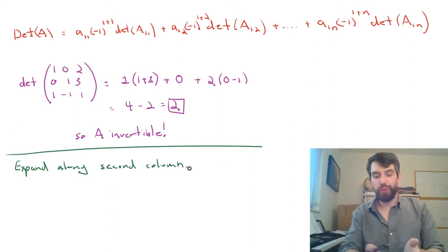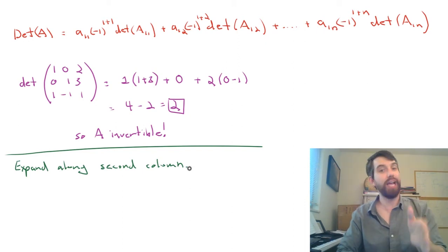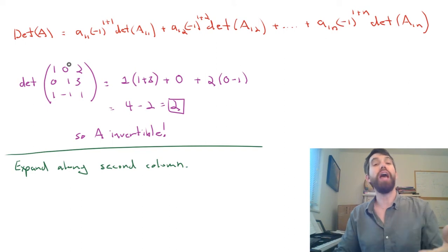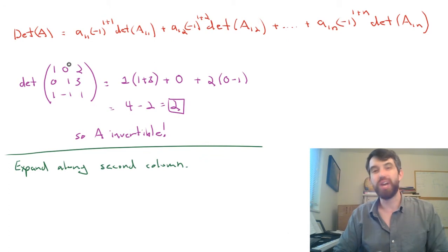If we wanted to, we could write out our whole big formula where the i's are unspecified, but the j's are always fixed at 2. But I don't think we need to do that. By the way, since you can expand along any row or column, it's usually helpful to expand along one that has a lot of zeros. For this particular matrix, expanding along the second column is nice because it has a zero in it.